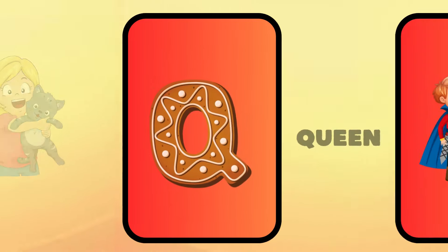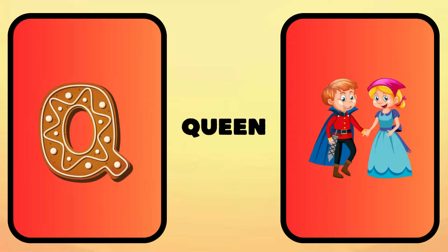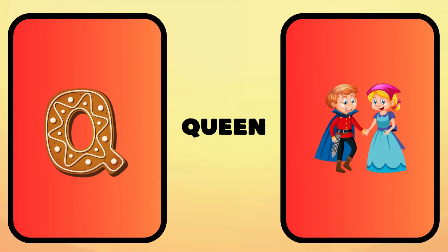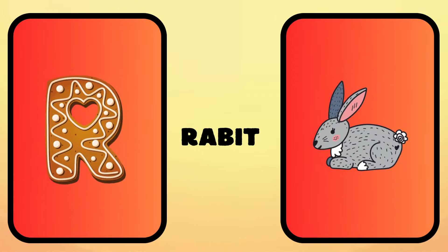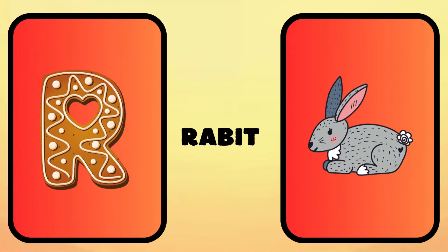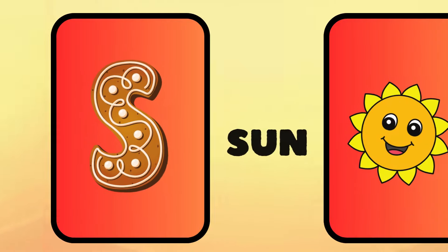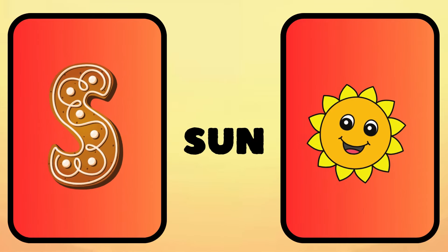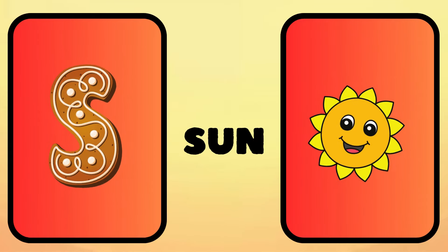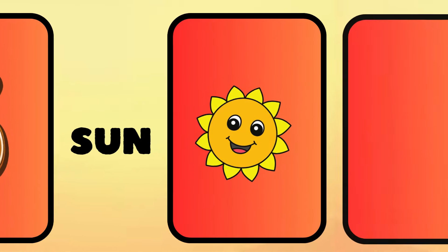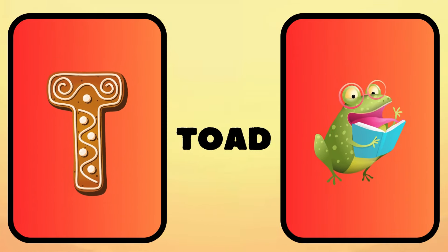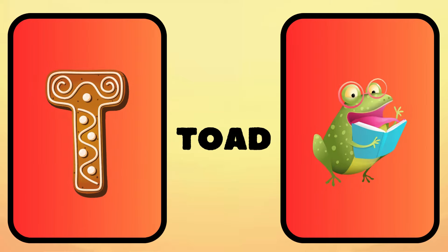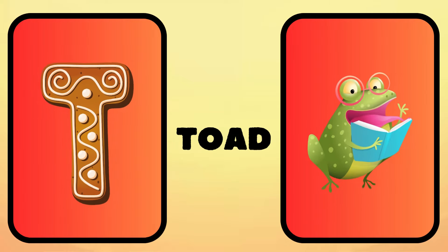Q is for queen, k-k-queen. R is for rabbit, r-r-rabbit. S is for sun, s-s-sun. T is for toad, t-t-toad.